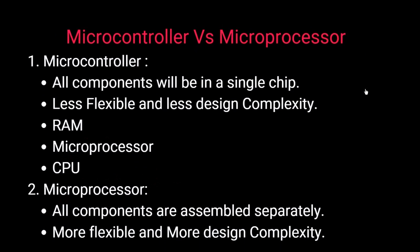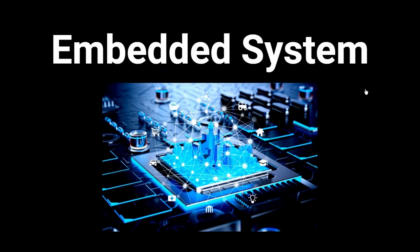In a microcontroller, all components are placed in a single chip — it is less flexible and has less design complexity. It has RAM, a microprocessor inside, and a relatively easy CPU design. In contrast, a microprocessor has all components assembled separately, making it more flexible but with more design complexity. An embedded system combines both software and hardware together.